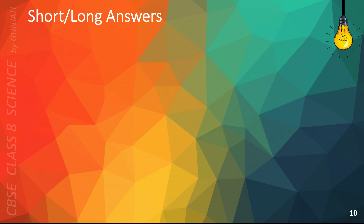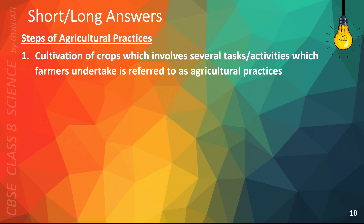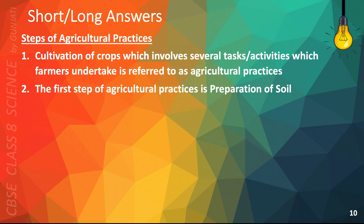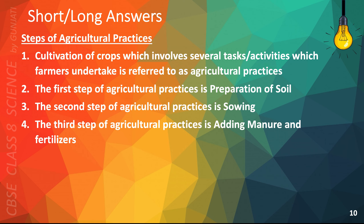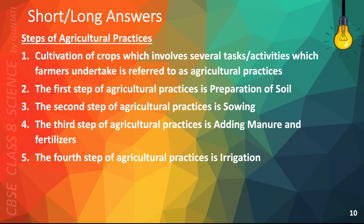As I mentioned earlier, this is the slide where I've arranged the multiple choice questions in such a way that it will help you answer long or short questions on basic practices of crop production. The following points will help you answer questions on steps of agricultural practices. Cultivation of crops which involves several tasks or activities which farmers undertake is referred to as agricultural practices. The first step is preparation of soil. The second step is sowing. The third step is adding manure and fertilizers. The fourth step is irrigation.